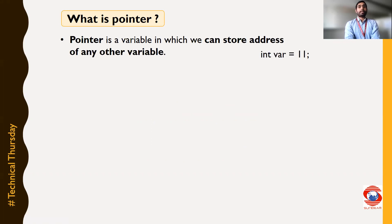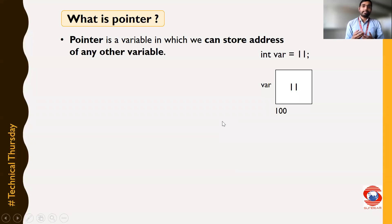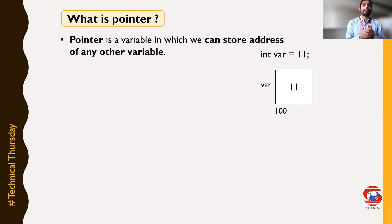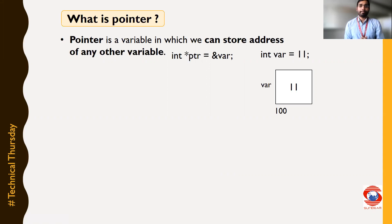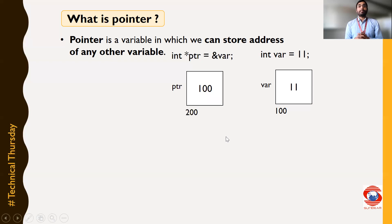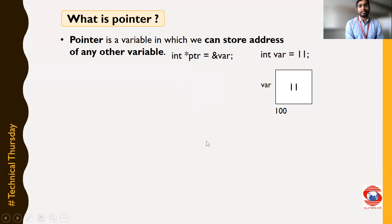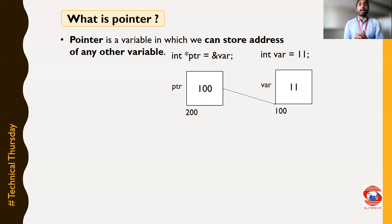Let's assume that we have declared one variable var inside our program. What will happen inside memory? Inside memory, 4 bytes of space will be reserved and inside those 4 bytes, that value 11 will be stored. Whatever will be the starting address of those 4 bytes will be considered as the address of that variable var. If you want to store this address 100 inside some pointer variable, we need to declare one pointer variable PTR and store the address of var inside that PTR. Some amount of space will be reserved and inside that reserved space we store 100. So, PTR is pointing to the address 100, which is the address of variable var.